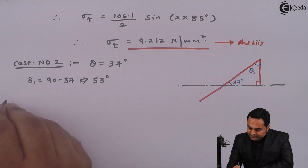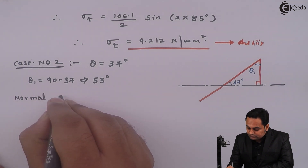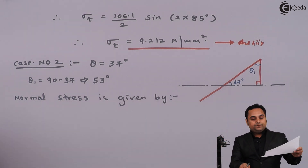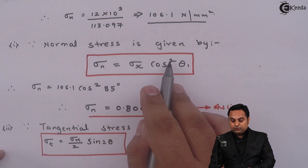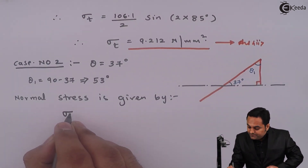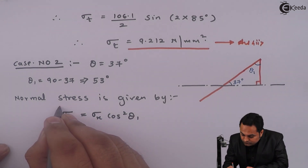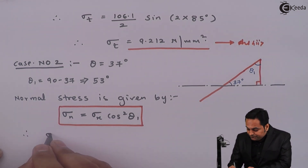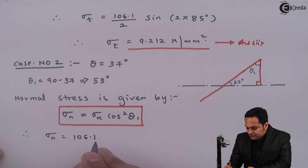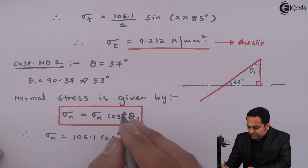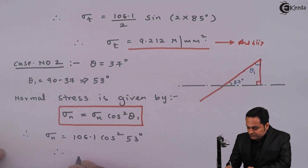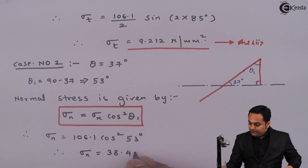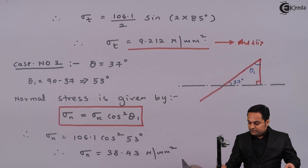Normal stress is given by the same formula: σn = σx × cos²θ₁. Putting the values: σx = 106.1 and θ₁ = 53 degree. Therefore, the normal stress comes out to be 38.43 N/mm². This is the third answer.